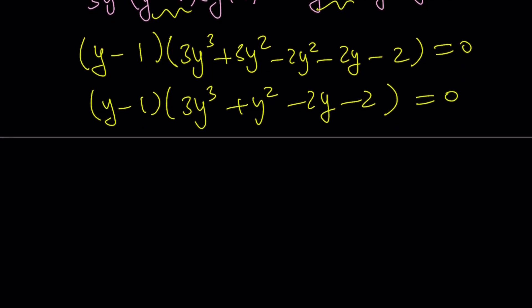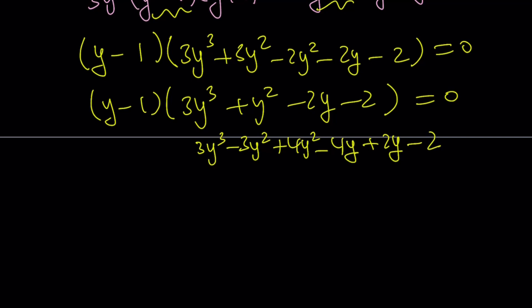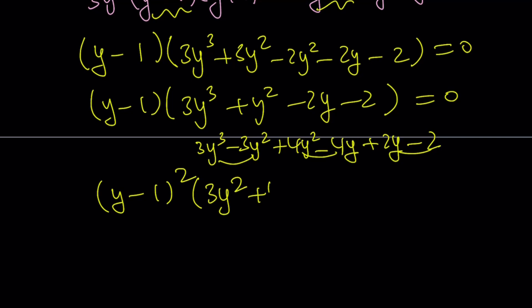If you check the sum of the coefficients of this cubic, it's 0 again, which means y equals 1 is a solution again. Factoring out y minus 1 by rearranging terms — breaking 3y cubed into parts, adjusting coefficients — gives y minus 1 squared times (3y squared plus 4y plus 2) equals 0. So y equals 1 is essentially a double root.